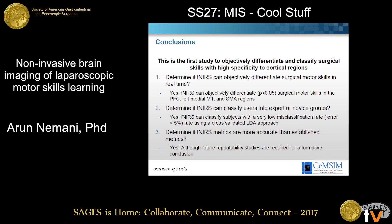What does this all mean? This is the first study to objectively differentiate and classify surgical skills with high specificity to three cortical regions. We're able to differentiate surgical motor skills in the prefrontal cortex, supplementary motor area, and left medial primary motor cortex. We're also able to classify subjects based on their cortical activation into expert or novice groups with very low misclassification error. Does that mean this will take over and become the new FLS? I don't think so — there's still a long way to go, and repeatability studies are needed before drawing formative conclusions.